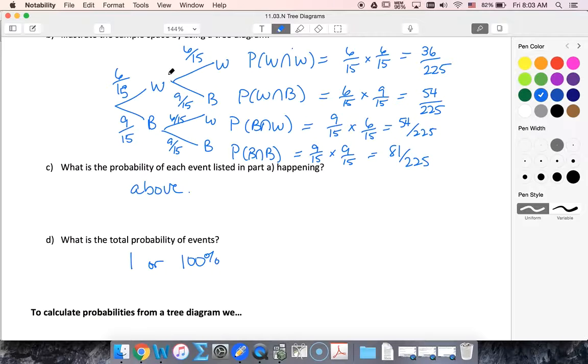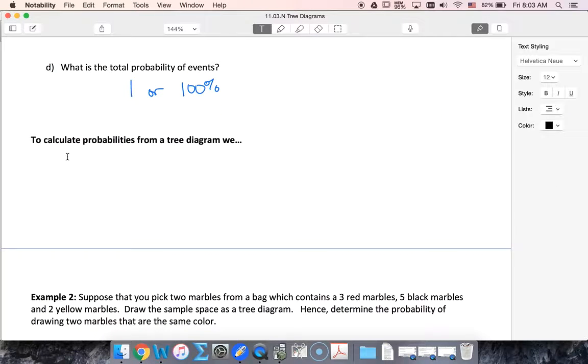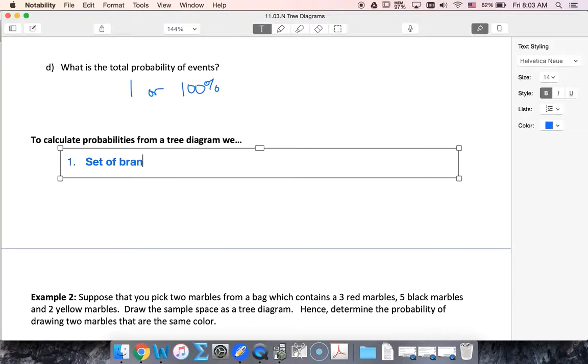So on a tree diagram, if I want to calculate the probabilities, then first I'm gonna do a set of branches for each event and then write the probabilities on the branches.